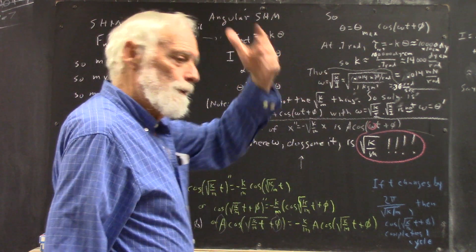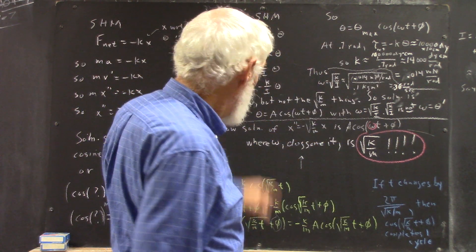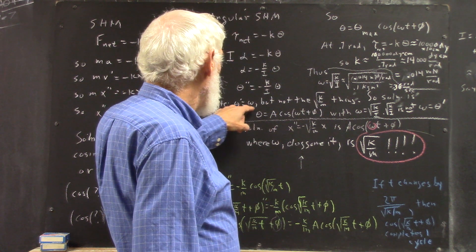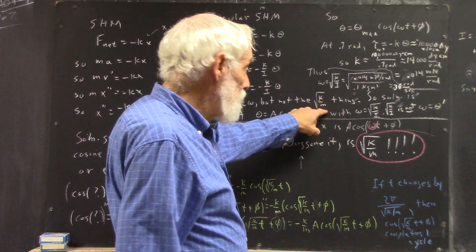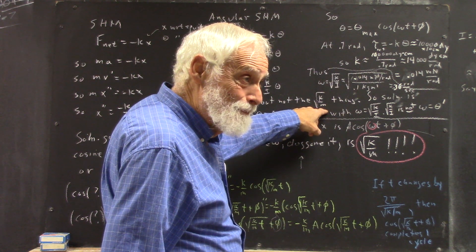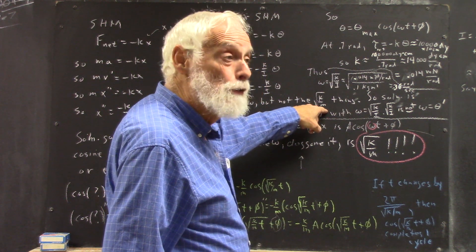So anyhow, here I'm going to just go with the book's notation. But I've got to note, theta prime is Omega, but that's not the k squared or k over m Omega. You don't want to confuse the two.